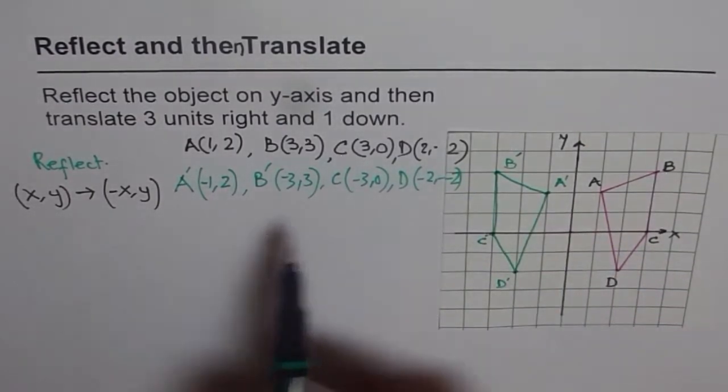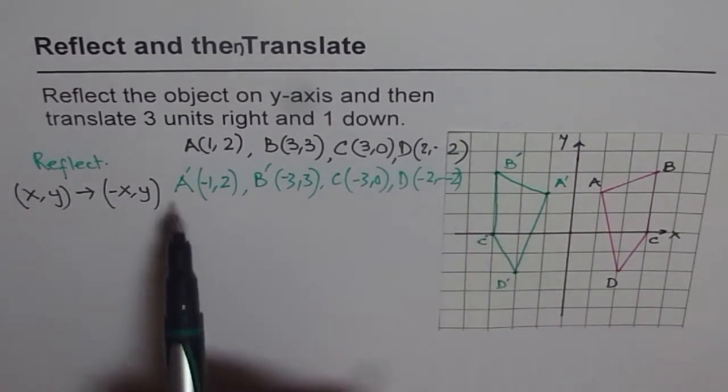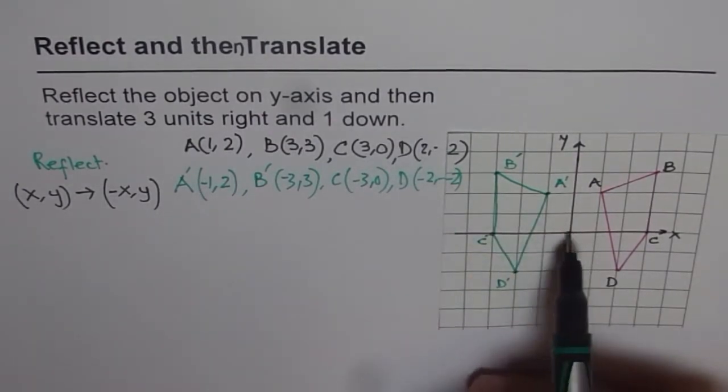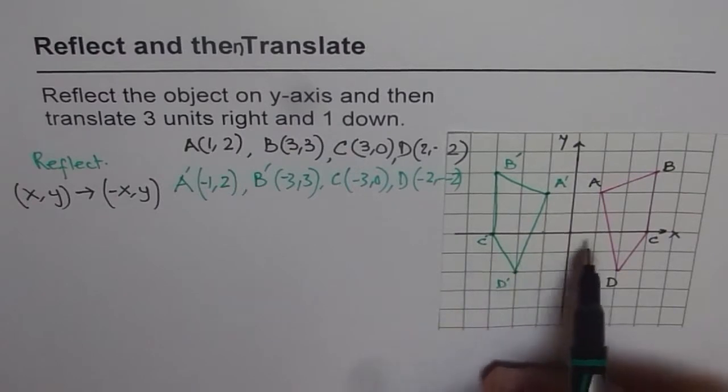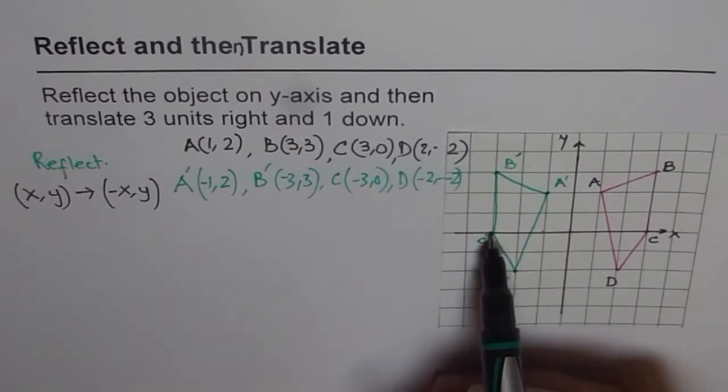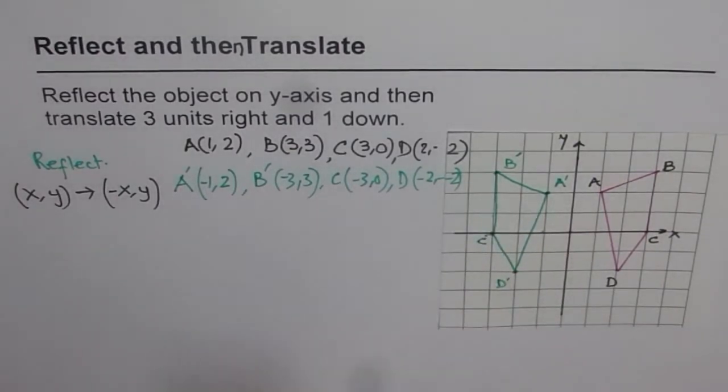Do you see that? You can check these points. Do they match? A dash, minus one, two. Correct. B dash is at (-3, 3). Correct.